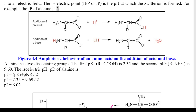Figure 4.4: Amphoteric behavior of an amino acid on addition of acid and base. Alanine has two dissociating groups: the first pK1 (COOH) is 2.35 and the second pK2 (NH3+) is 9.69. The isoelectric pH (pI) of alanine is calculated as: pI = (pK1 + pK2) / 2 = (2.35 + 9.69) / 2 = 6.02. Figure 4.5: Titration curve of alanine.